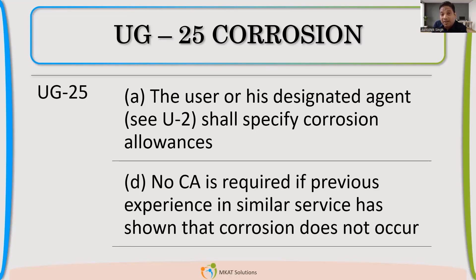So if it is not given, ask the client or the process department or the user to provide the Corrosion Alliance. We are not the one who should give the Corrosion Alliance. This is what code is saying, I'm not saying that.